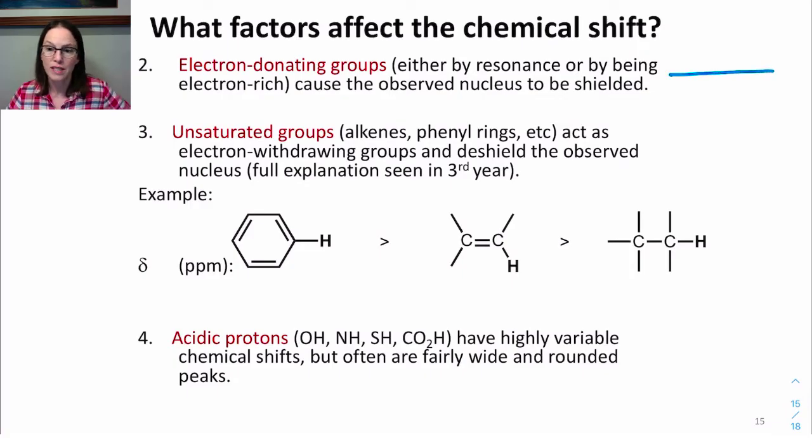Electron-donating groups cause the nearby nuclei to be shielded, either by resonance or by the chemical environment itself being rich. So remember that shielded means shifted to the right on the spectrum, more towards 0 ppm.